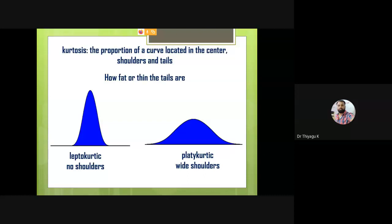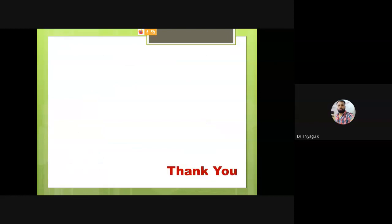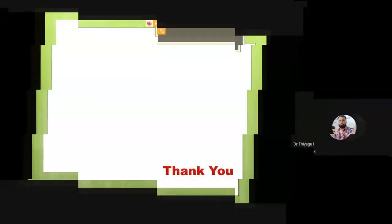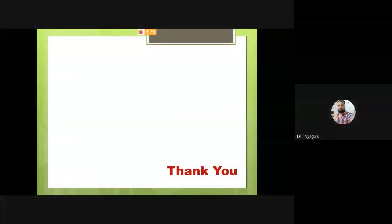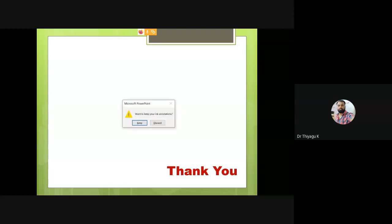The leptokurtic is called narrow shoulders; platykurtic has wide shoulders. I hope you understand what is kurtosis. The skewness is talking about symmetry; kurtosis may talk about peakness. Skewness has two types: positive and negative. Similarly in kurtosis there are three things: lepto, meso, and platy. I hope this session is very useful for you.